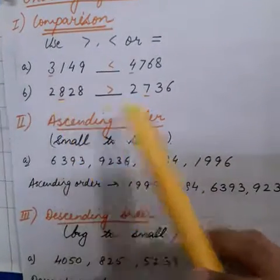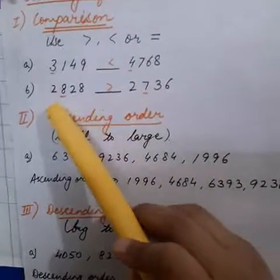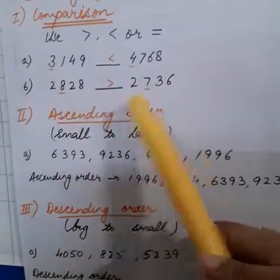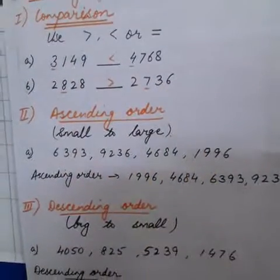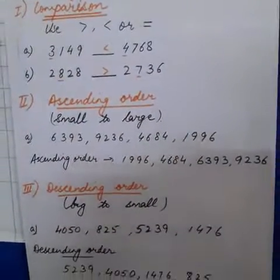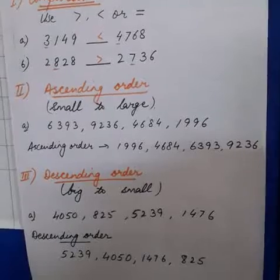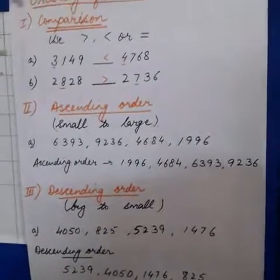8 is greater than 7. So this whole number will be greater than this number. So, 2828 will be greater than 2736.